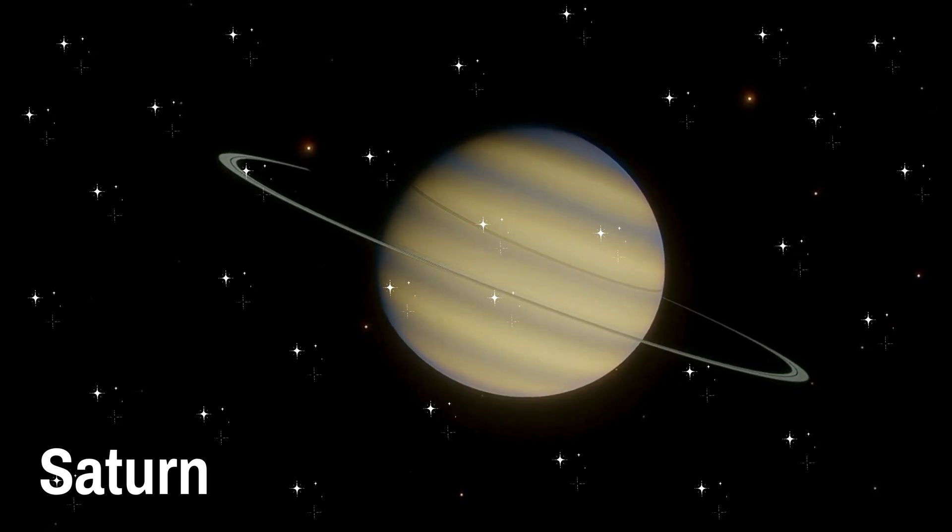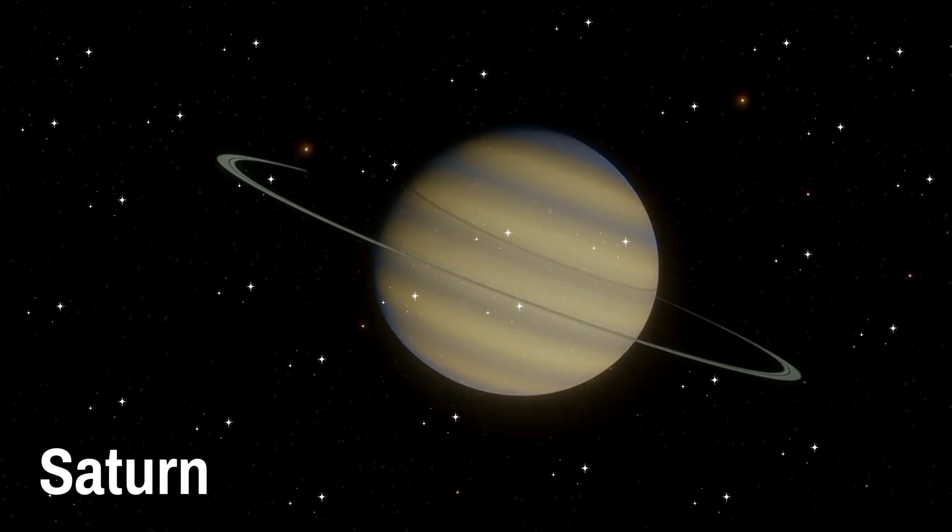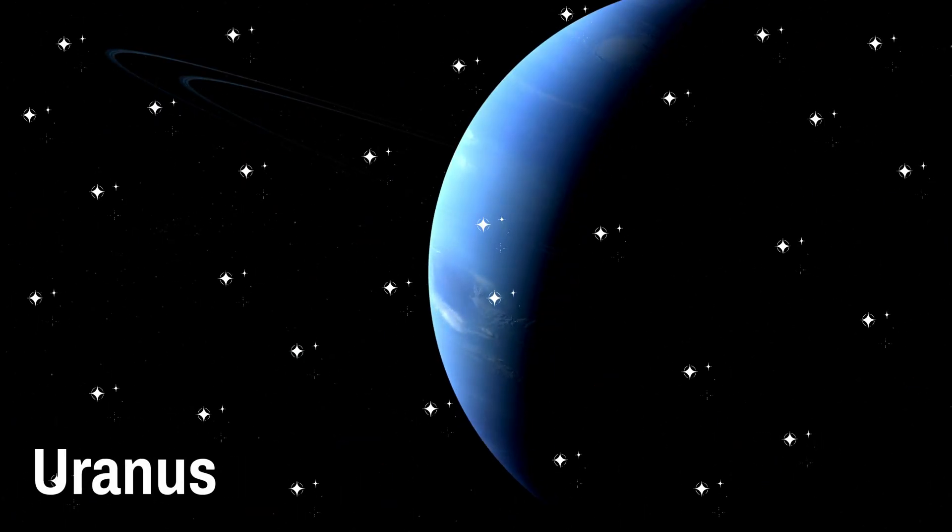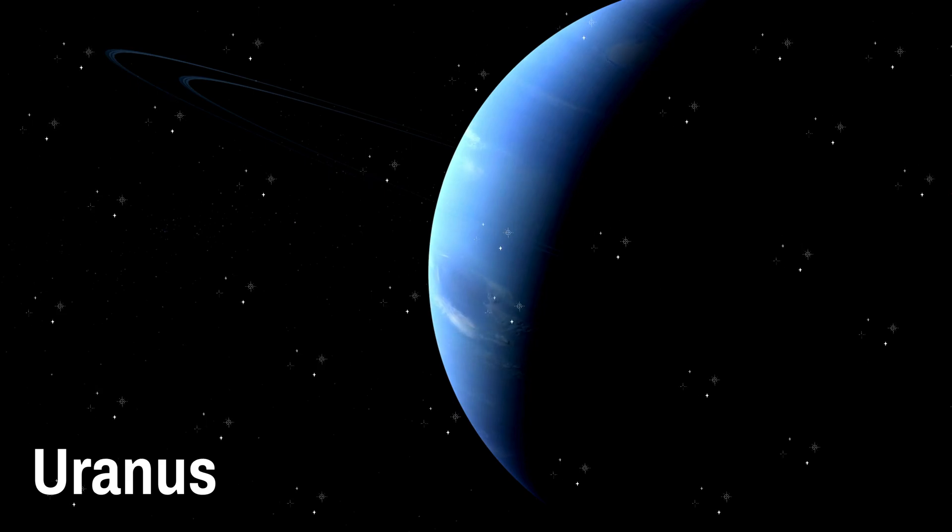Uranus tilts as it spins around Rolls like a marble on its side Blue green colors it can't hide